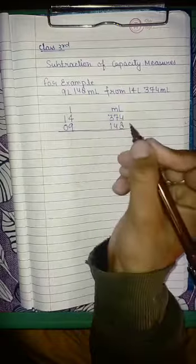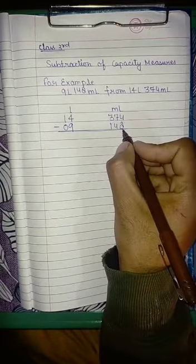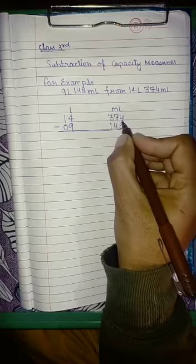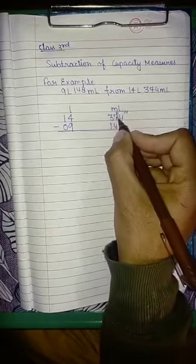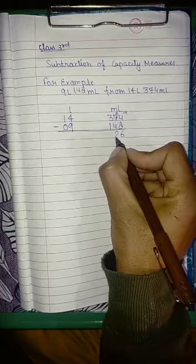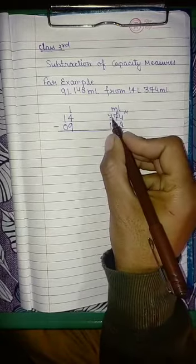Then 148. To make it 2 digit you can put 0 over here. Now we will do the subtraction. Now 4 cannot subtract 8, so we will take out 1 from 7, so it will become 14. 14 minus 8, that will be 6. Now it becomes 6. Then 6 minus 4, that will be 2. Now 3 minus 1, that is 2.